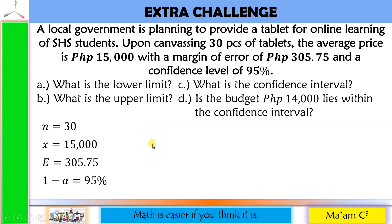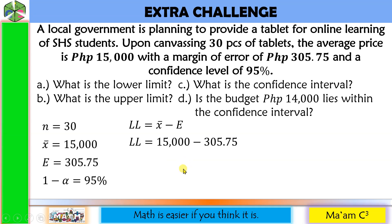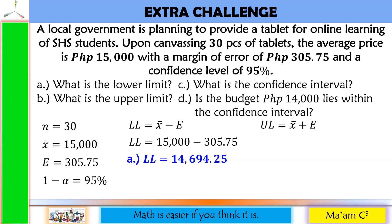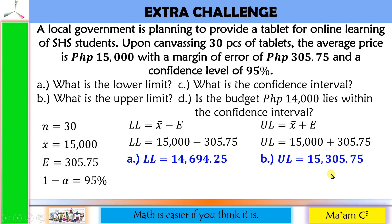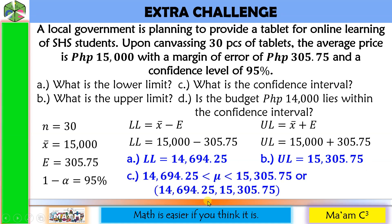For letter A, the lower limit equals sample mean minus margin of error: 15,000 minus 305.75 equals 14,694.25 pesos. For letter B, the upper limit equals sample mean plus margin of error: 15,000 plus 305.75 equals 15,305.75 pesos. So the confidence interval is 14,694.25 less than mu less than 15,305.75. For letter D, the budget of 14,000 pesos — since the lower limit is 14,694.25, the value 14,000 does not lie within the confidence interval.